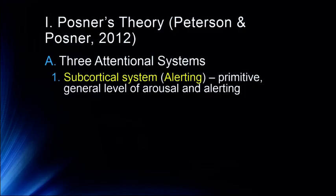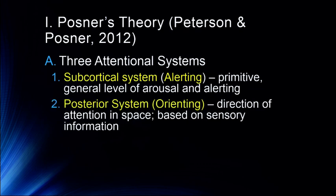Posner proposed three different attentional systems. First, a subcortical system, also known as the alerting system — this is devoted to general levels of arousal and alerting, involved in things like alerting us for danger and automatically capturing our attention. The posterior system is also known as the orienting system, involved in direction of attention in space — how we visually orient to a specific location based on sensory information.